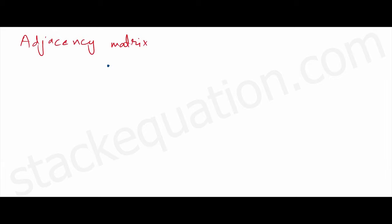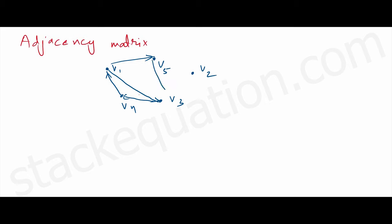A graph comprises edges and vertices. Let's say we have a graph with five vertices: V1, V2, V3, V4, and V5. Now let's create edges: we have an edge from V1 to V3, V3 to V4, V4 to V1, V1 to V5, V3 to V5, V5 to V2, and V2 to V3.